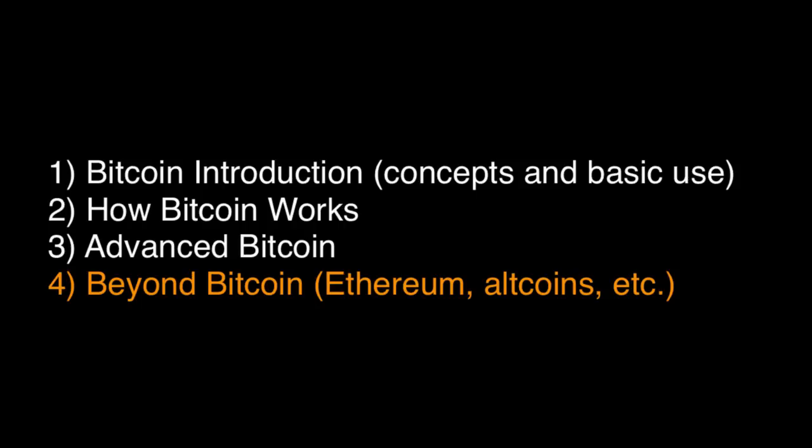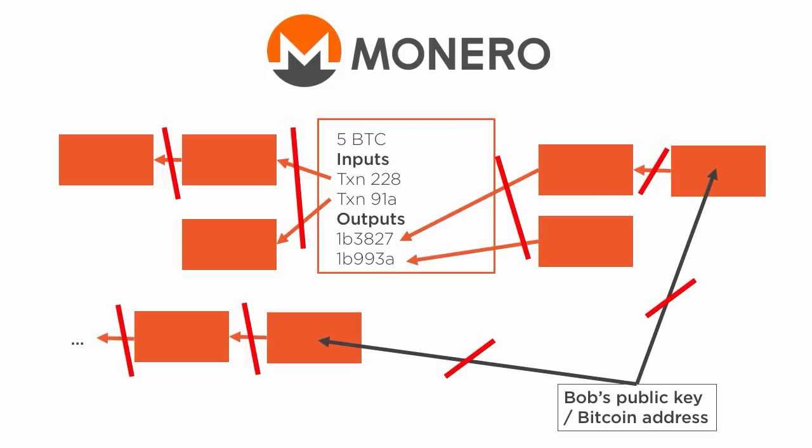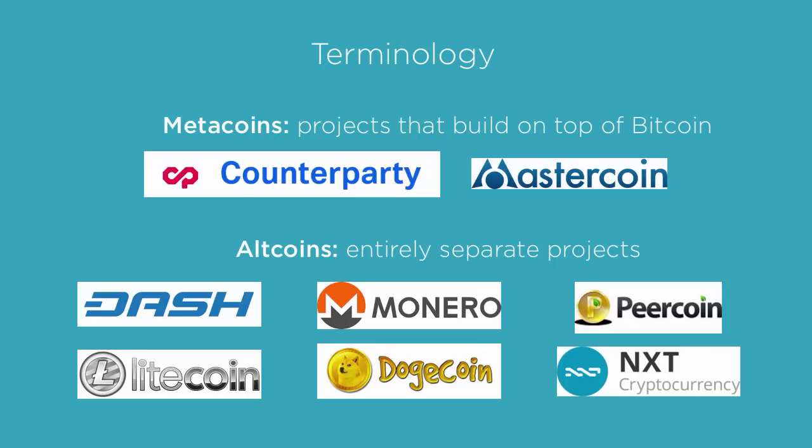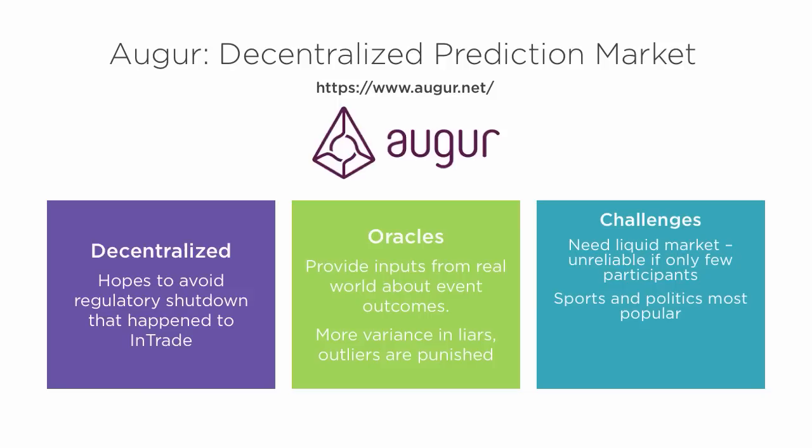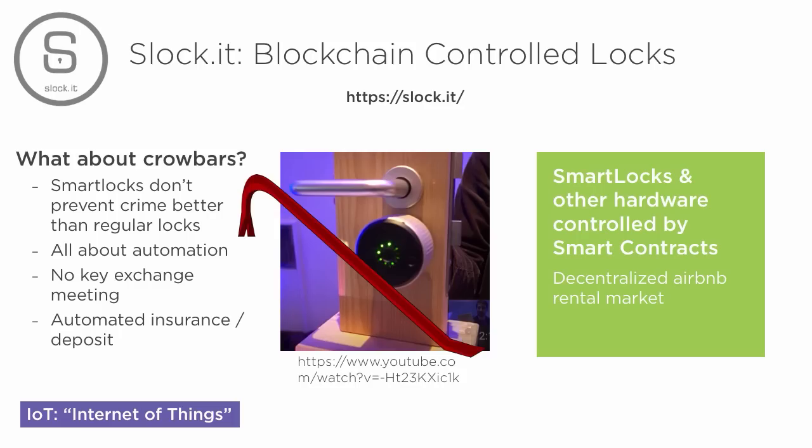The fourth module surveys a number of promising decentralized projects beyond Bitcoin, including important altcoins like Monero, Dash, and Litecoin, and also non-currency projects like Ethereum, prediction markets, private blockchains, IoT, identity, and storage-related applications like IPFS.